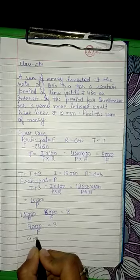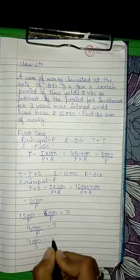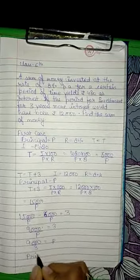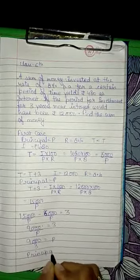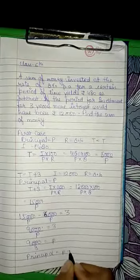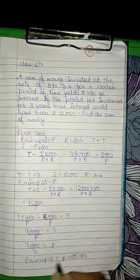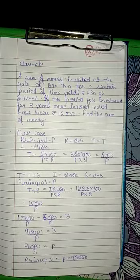Now 3 will come to the other side, so 9,000 divided by 3 gives us P equals 3,000. So the sum of money, which is the principal, equals 3,000 rupees.